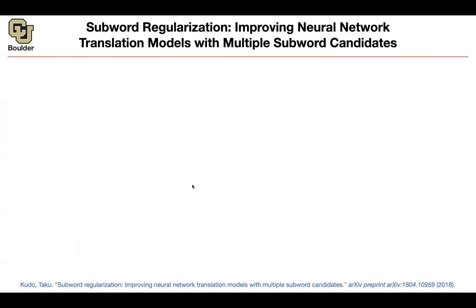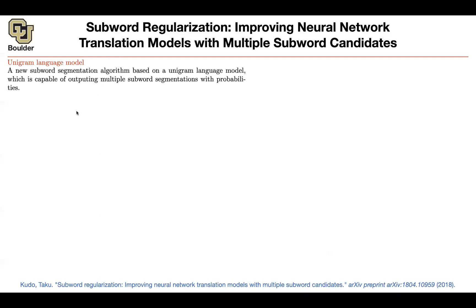Let's move on. I promised to give you the unigram model, which is a different version of coming up with subwords. The idea is using a unigram language model to do the subword segmentation process. It's going to give us a new subword segmentation algorithm based on a unigram language model, and it's capable of outputting multiple subword segmentations with their corresponding probabilities. You'll appreciate why you want multiple segmentations by the end of this slide.